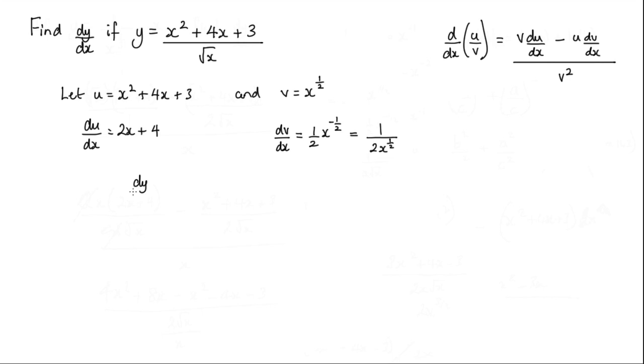So dy/dx is equal to v times du/dx. So these two multiplied: we're going to get v which is x^(1/2), and that's going to be multiplied by 2x + 4. Now we're going to subtract u times dv/dx. So this multiplied by this: we have x² + 4x + 3 in brackets.